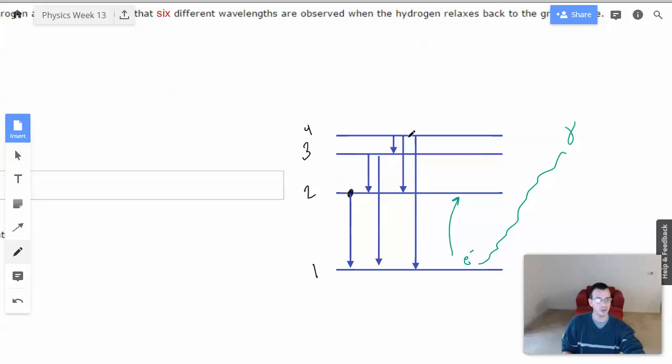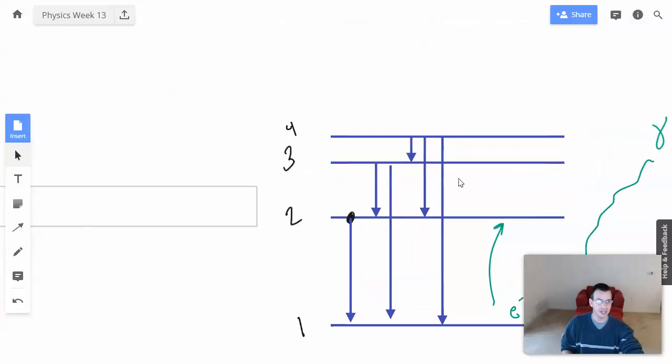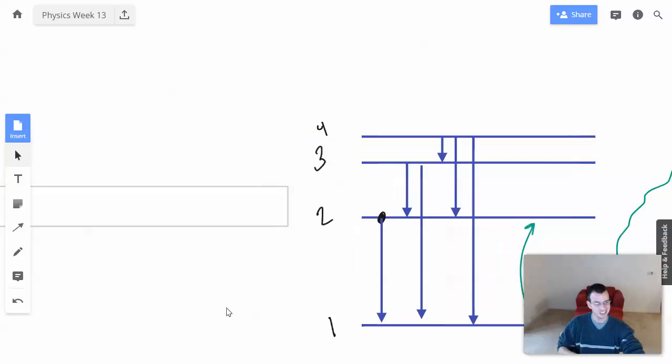So if the electron made it all the way up to the fourth state, it could then drop down to three separate places, either the third, the second, or the first. And then once it got to the third, second, or first, it could then drop down once again to the second or the first. And then once it got to the second, it could drop down from second to one. And each of these transitions is going to be a different wavelength of light. So if we have six different wavelengths, we're going to have one, two, that's three, that's four, that's five, that's six. Six different possible wavelengths.